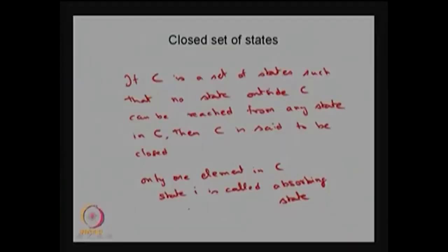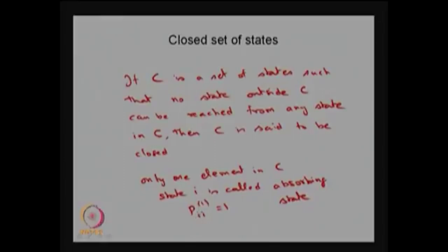There is also the possibility of more than one element in the closed communicating class. We can define the absorbing state through the closed communicating class, or equivalently using the definition P(i,i) in one step equals 1. That means the diagonal element of the corresponding state's row in the one-step transition probability matrix is 1 — the system starting from state i moves back to state i with probability 1. So there are two ways to define an absorbing state.